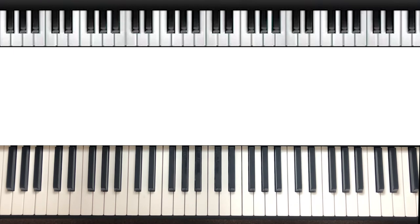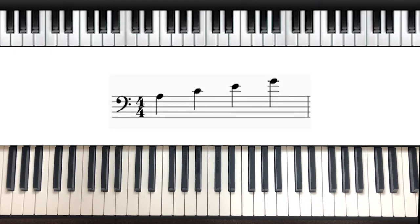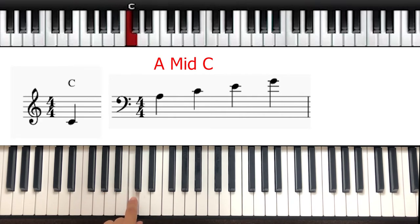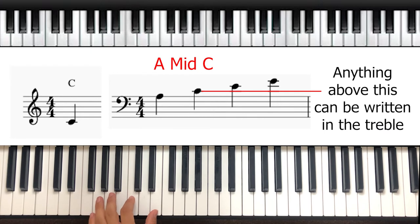Now that we've covered the treble clef, we can go on to the bass clef. Starting from the top, we know that the top line is A, then the line above that is middle C, the same as the one on the treble clef that goes underneath it. This means that anything above this can be potentially written in the treble clef.